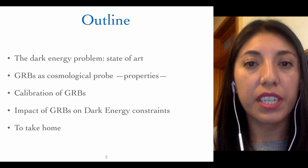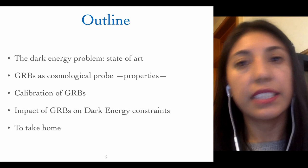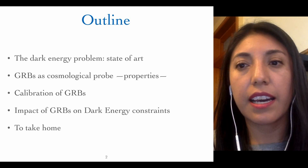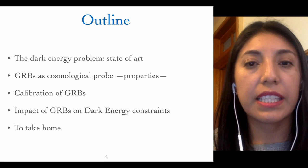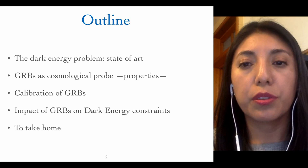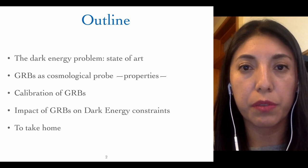Here is the outline of my talk. First, I will talk briefly about the state of the art of the dark energy problem. Then I will show you the general properties of gamma-ray bursts and how they have a key role in the future development of cosmology, since they have been observed at higher redshifts than supernovae Ia. After that, I will present the calibration we perform in this work and the results we obtain when we study three popular effective dark energy models.